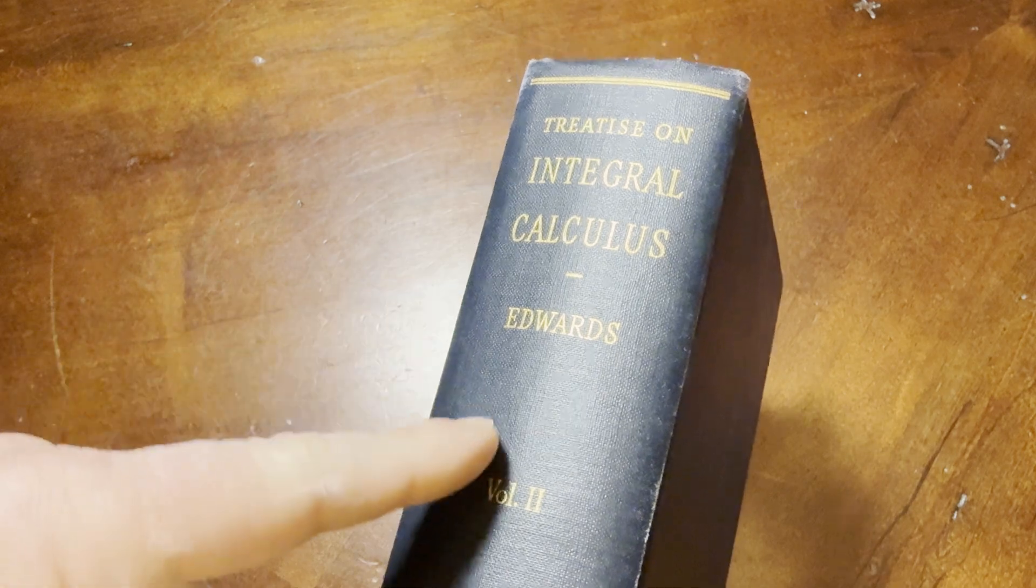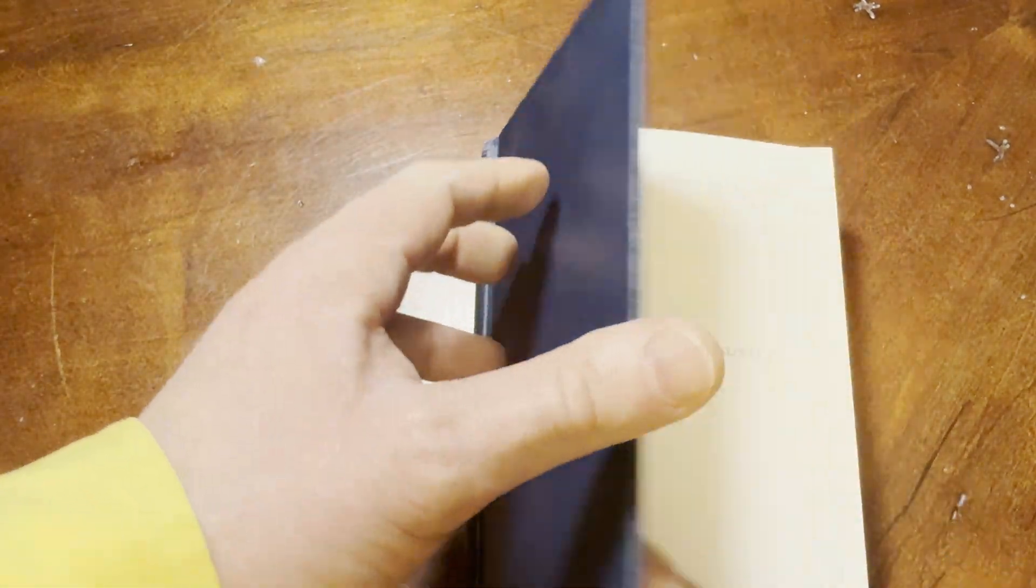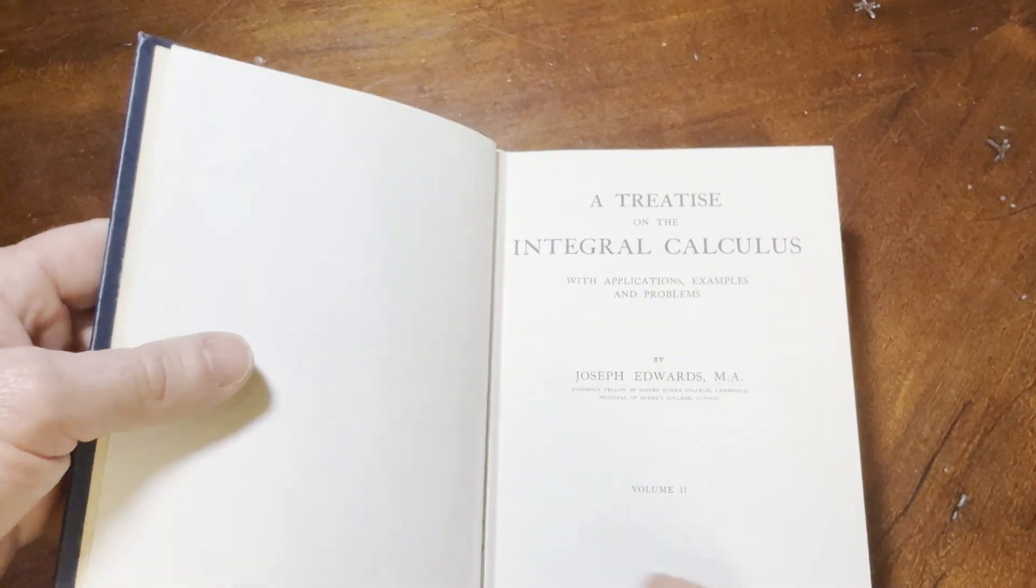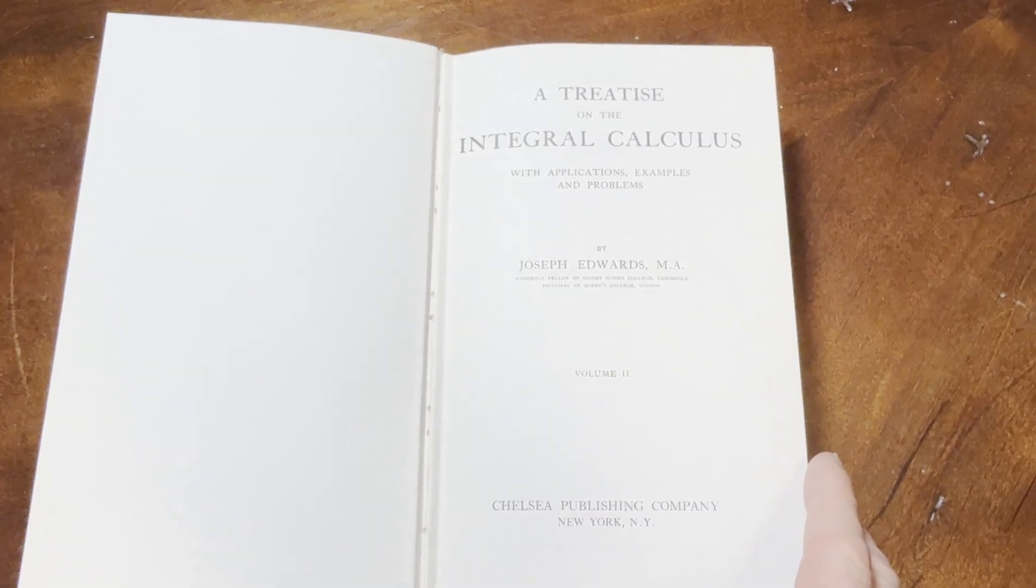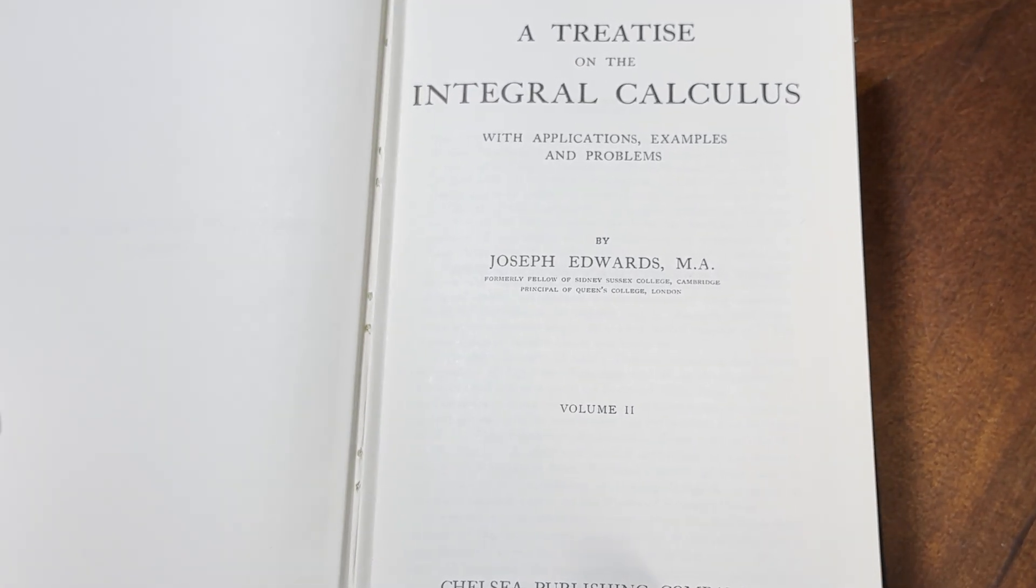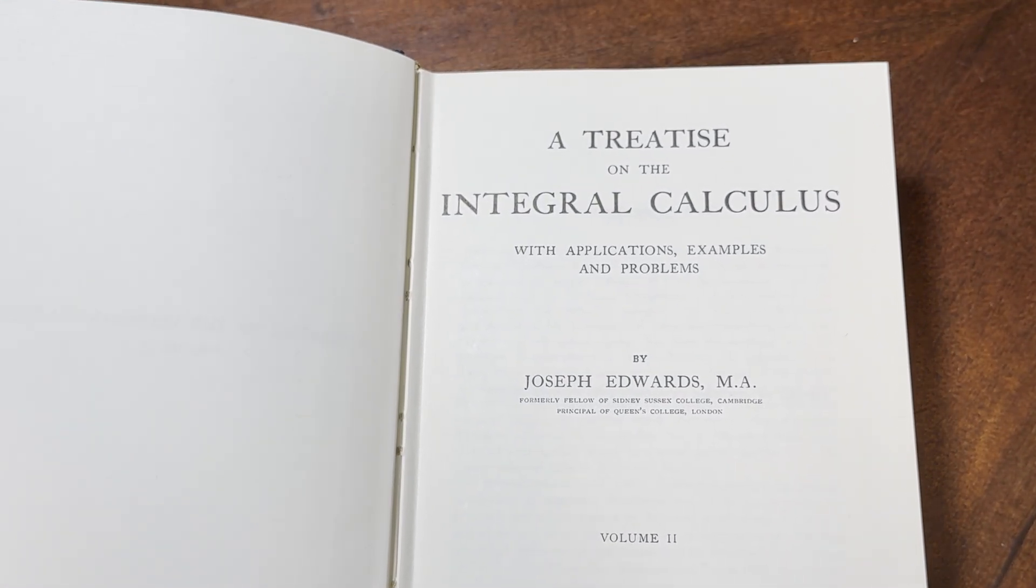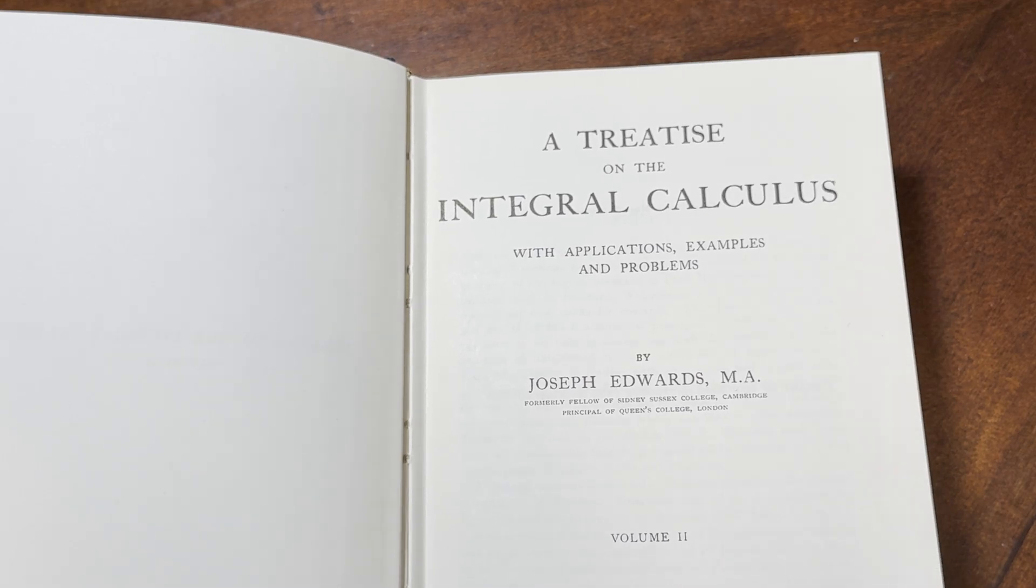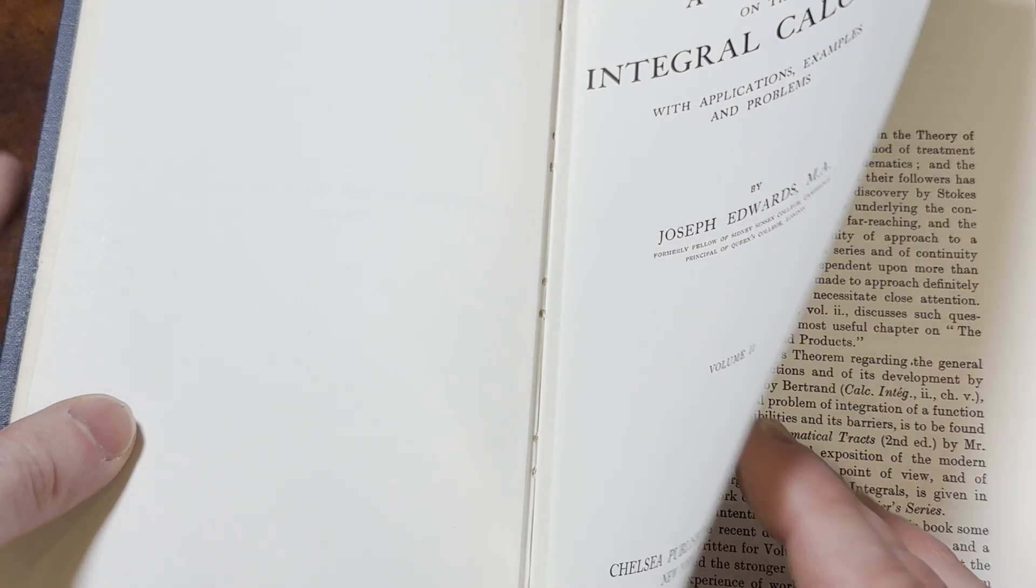This book might be free because it's so old, so it might be in the public domain. And this is volume two, as you can see, A Treatise on the Integral Calculus with Applications, Examples, and Problems by Joseph Edwards M.A. Cool, right?